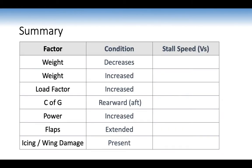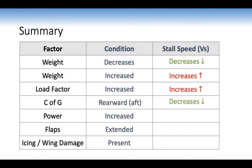Summary of all factors: if weight decreases, stall speed decreases; if weight increases, stall speed increases. Load factor — if increased, stall speed increases. Centre of gravity — if it moves rearward, stall speed decreases. Power increased — stall speed decreases, as our stall is calculated using power idle. Flaps extended — stall speed decreases. Icing or wing damage present — stall speed will increase.